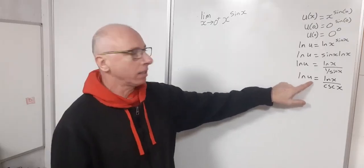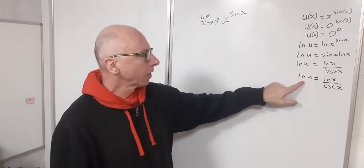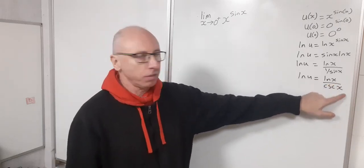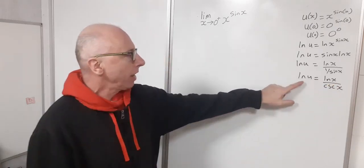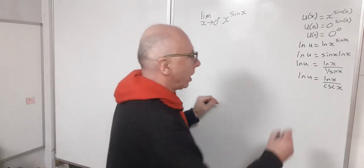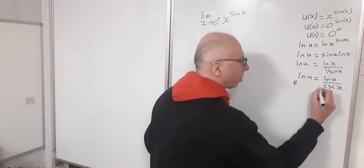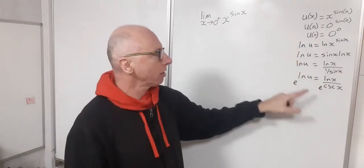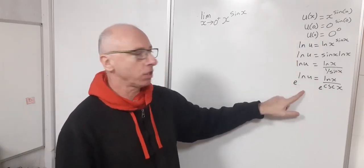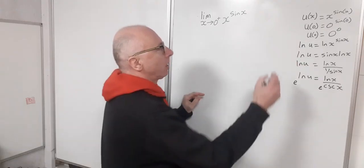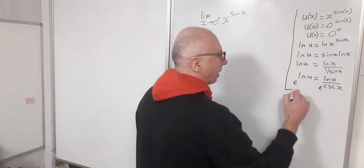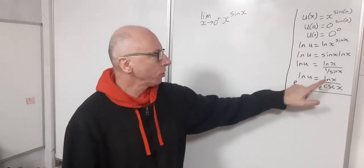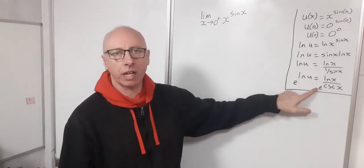The log of the limit equals the limit of the log, so we can work with this form. At the end we'll exponentiate both sides to cancel the logarithm and get our final result. Let's box that relationship and now focus on finding the limit of ln(x)/csc(x), leaving the exponential step for the very end.